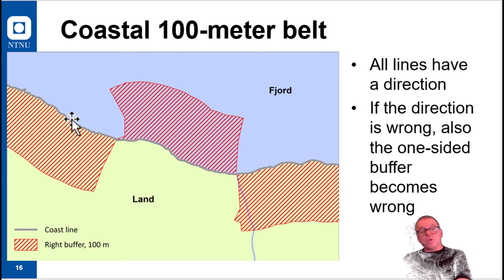Different segments had different directions. So for the segment of the coast here, right hand buffer became onshore, but the next segment, the 100 meter belt came offshore because the direction of the line was different. And then again, next segment, it was correct onshore. So if the geometry in your input linear feature is wrong, running the one-sided buffer will also create a wrong buffer.